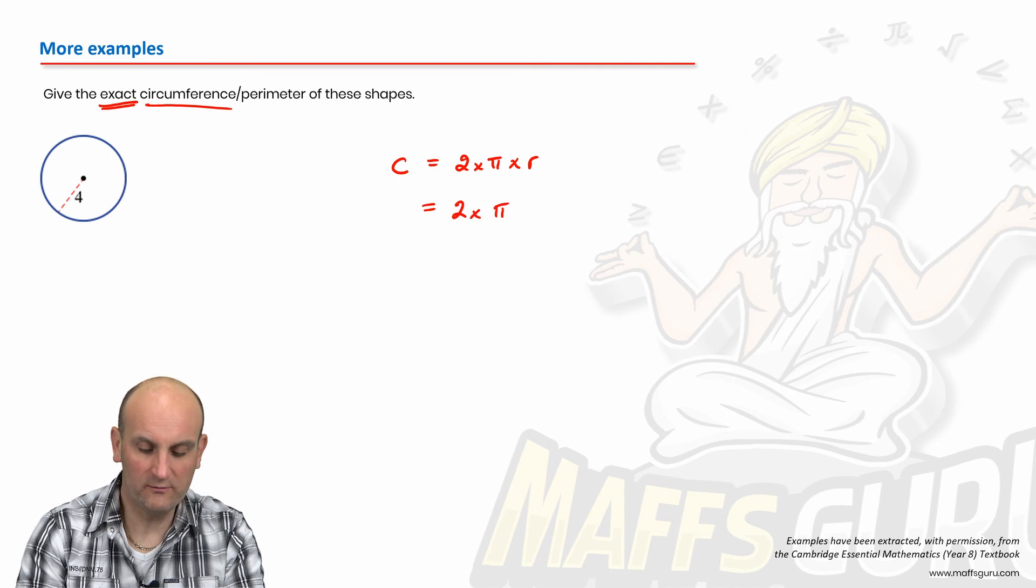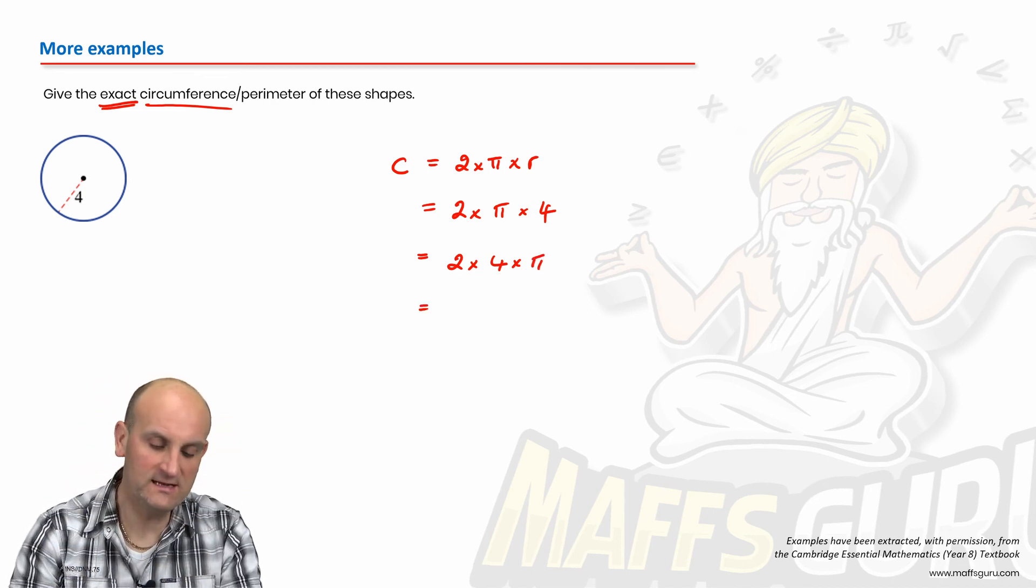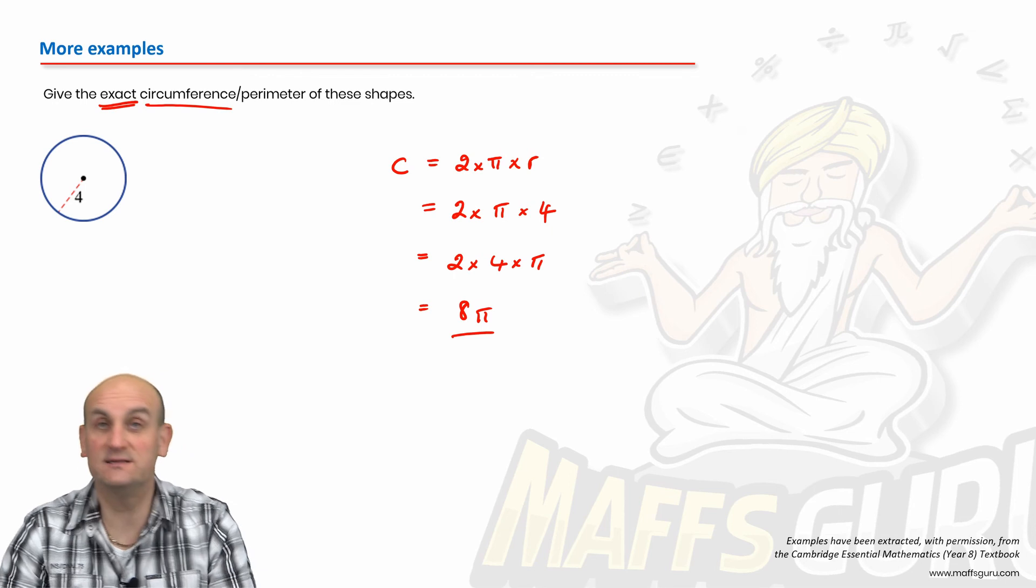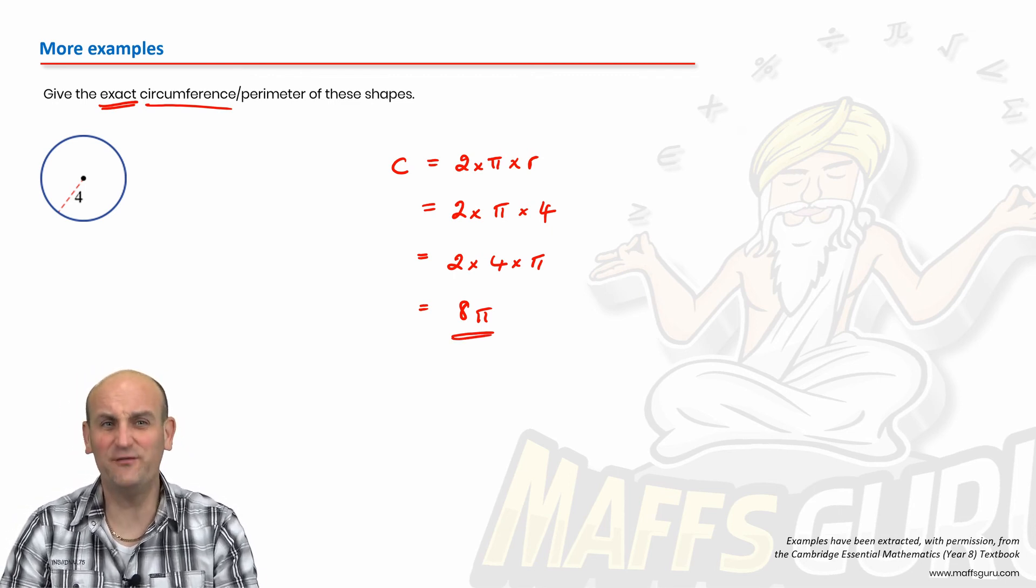Substitute now 2 times pi by 4. And that's the same as 2 times 4 by pi. Because again, all those kissy kisses, just move them around. And that gives me 8 pi. Do I need to put it in my calculator to get the decimal number? No, because it says give the exact value. This stuff's freaking awesome.